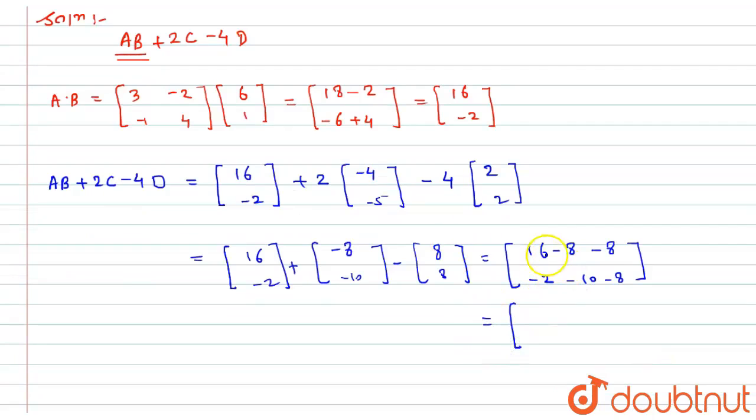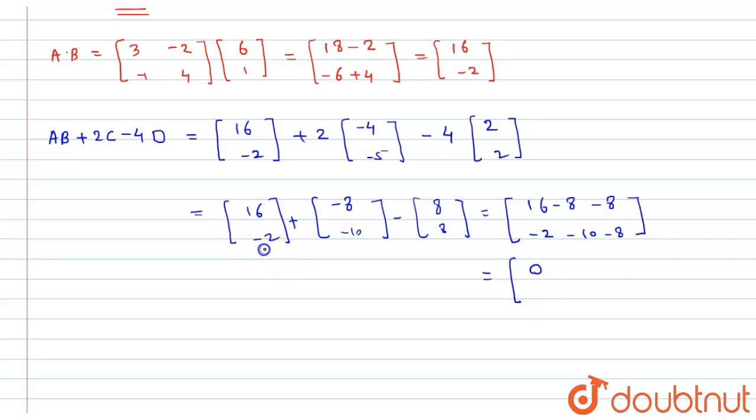So after doing this, I will get 16 - 8 = 8, and 8 - 8 = 0. Here, -2 - 10 - 8 will be -20. So here I got the answer: AB + 2C - 4D equals [0; -20].